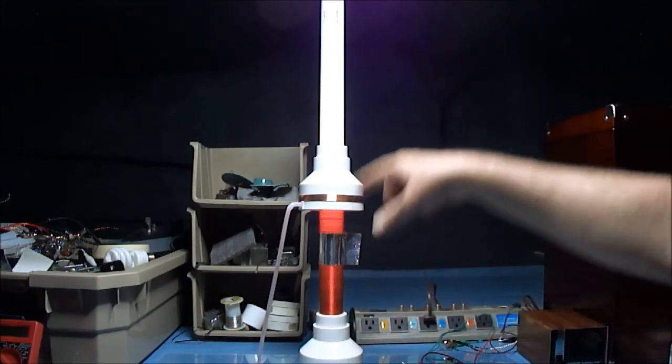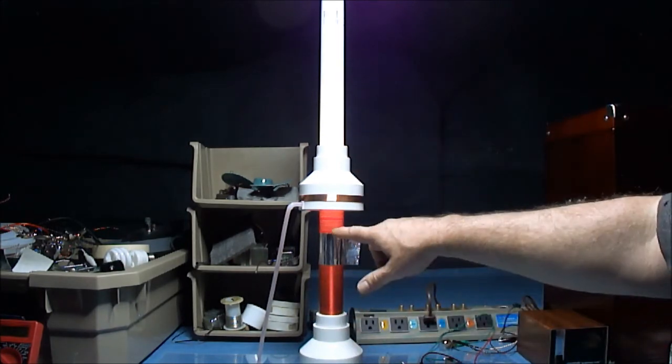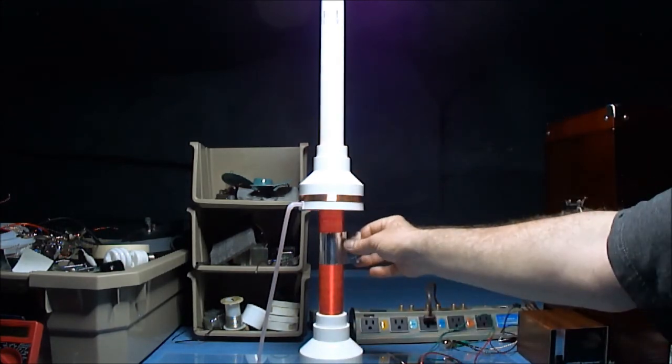So the high voltage goes down and comes up into the bulb, and the capacitance of the coil is what's helping it to light.